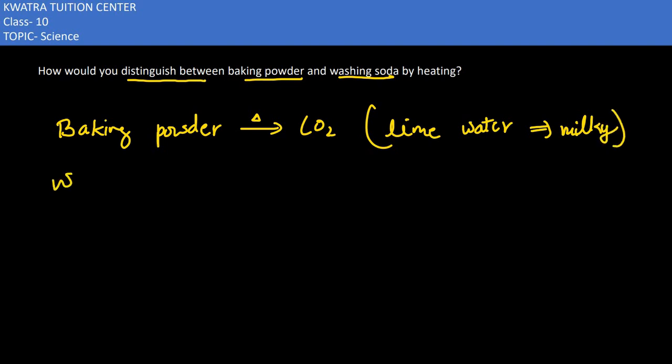But washing soda, if we heat it, won't be releasing any carbon dioxide. So you can distinguish between them using this method. That's your answer for the fifth part.